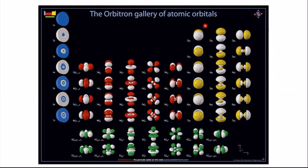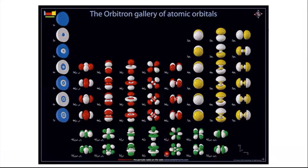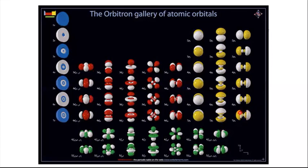The main group elements on the right side of the table contain p orbitals — you can see 2p and then 3p, with 3p extending further from the nucleus. Going further down, the orbitals extend even further out. The lanthanides and actinides at the bottom contain f orbitals at N=4 and N=5. Larger atoms at lower rows have orbitals much further from the nucleus.